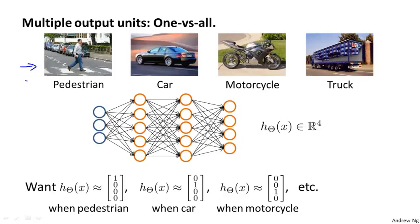Four categories of objects. So given an image, we want to decide if it's a pedestrian, a car, a motorcycle, or a truck. If that's the case, what we would do is, we would build a neural network with four output units, so that our neural network now outputs a vector of four numbers. So the output now is actually going to be a vector of four numbers.